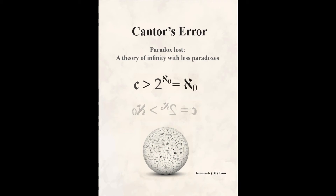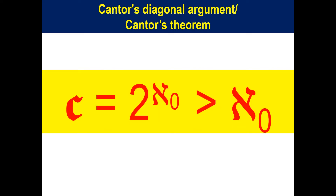This video discusses the most important theorems in the book: Cantor's Diagonal Argument and Cantor's Theorem, which led to the conclusion that C, the cardinality of real numbers, is 2 to the power ℵ₀ and is larger than ℵ₀, the cardinality of the natural numbers.